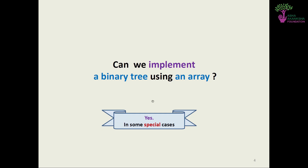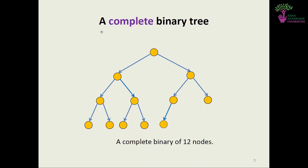Can we implement a binary heap using an array? Yes, and we do so for special cases. Recall the complete binary tree from a previous lecture — we fill the tree top-down and in the last level from left to right. For a complete binary tree with 12 nodes, we start from the top: first node, then two at the next level, then four, and so on until all 12 nodes are placed.